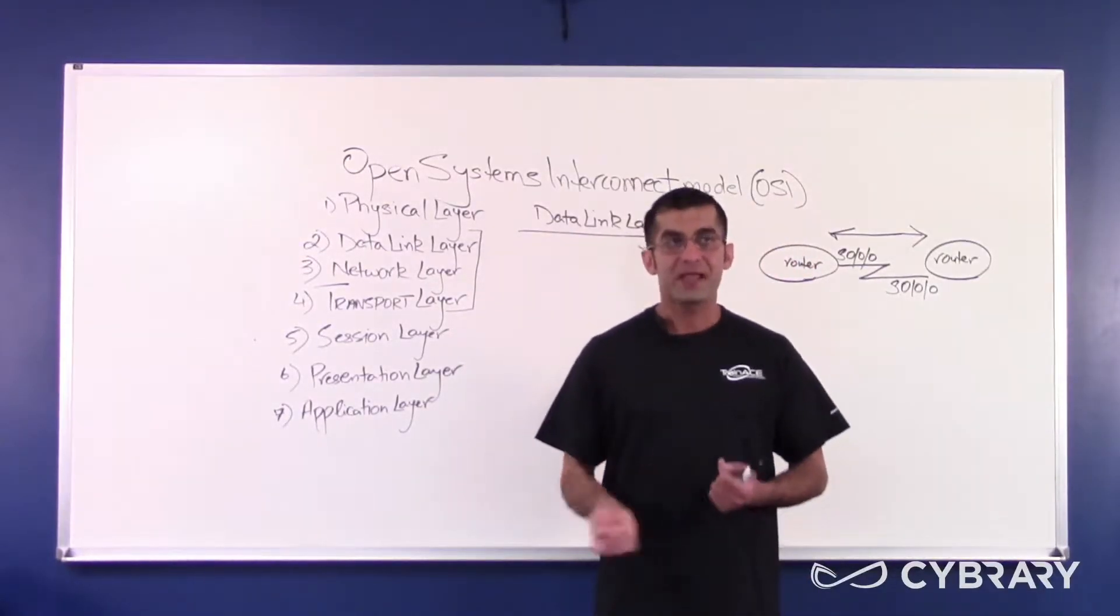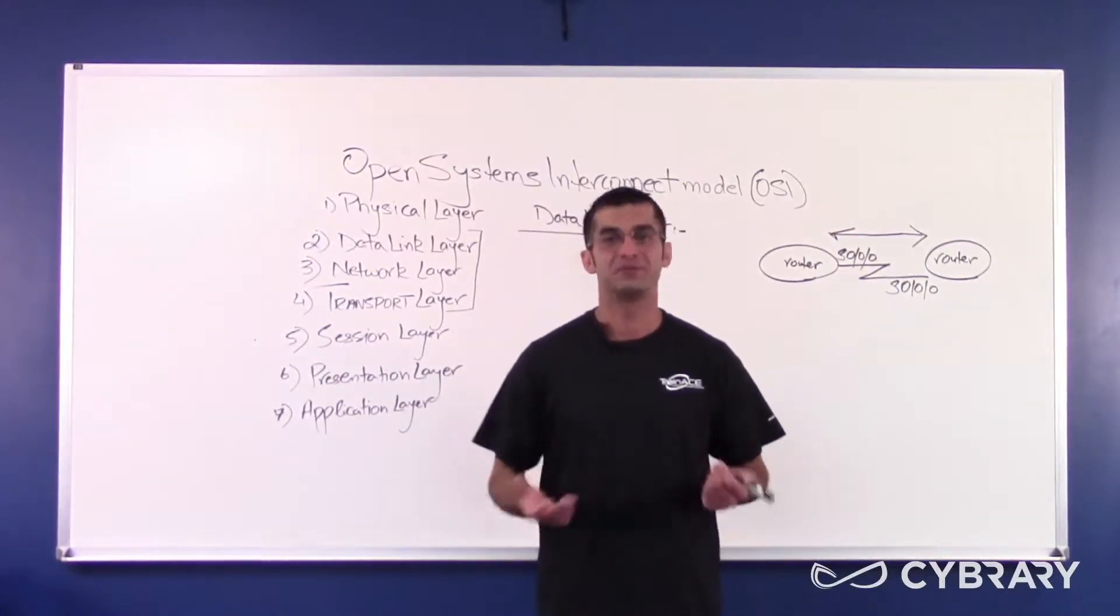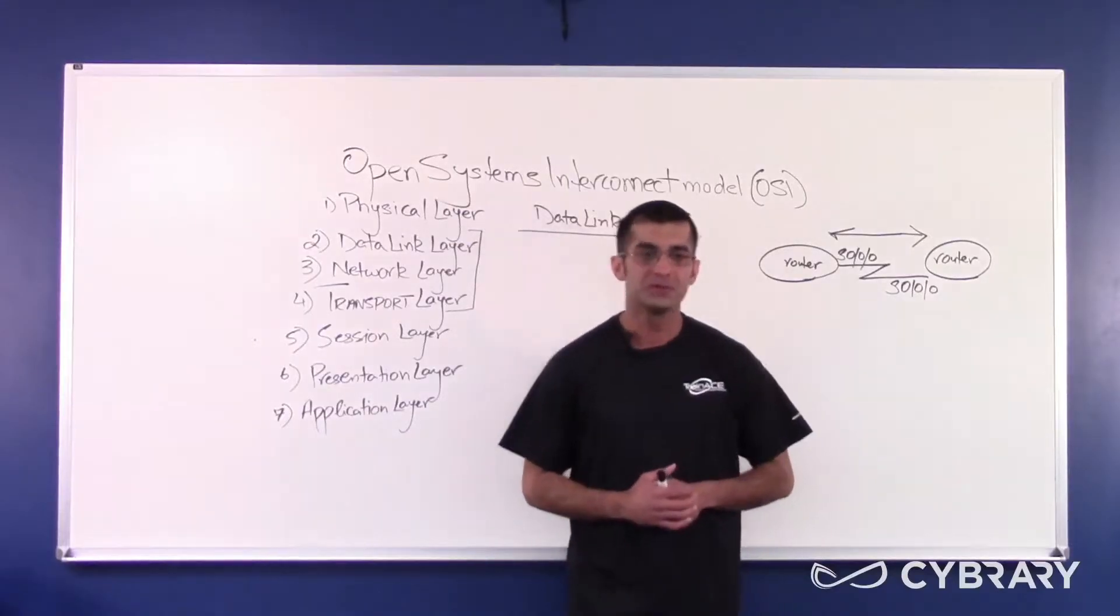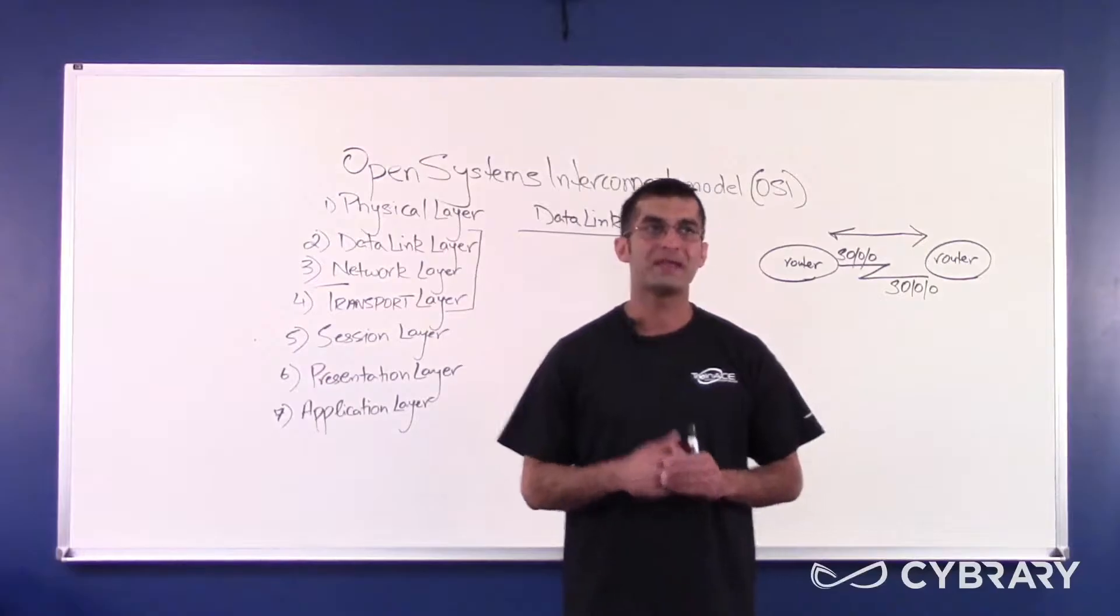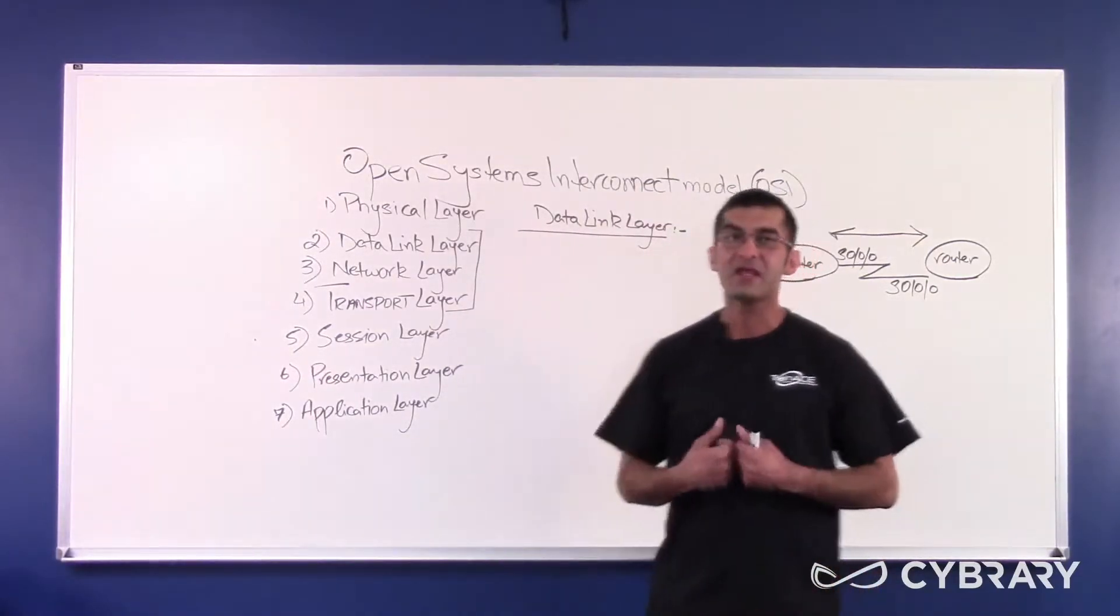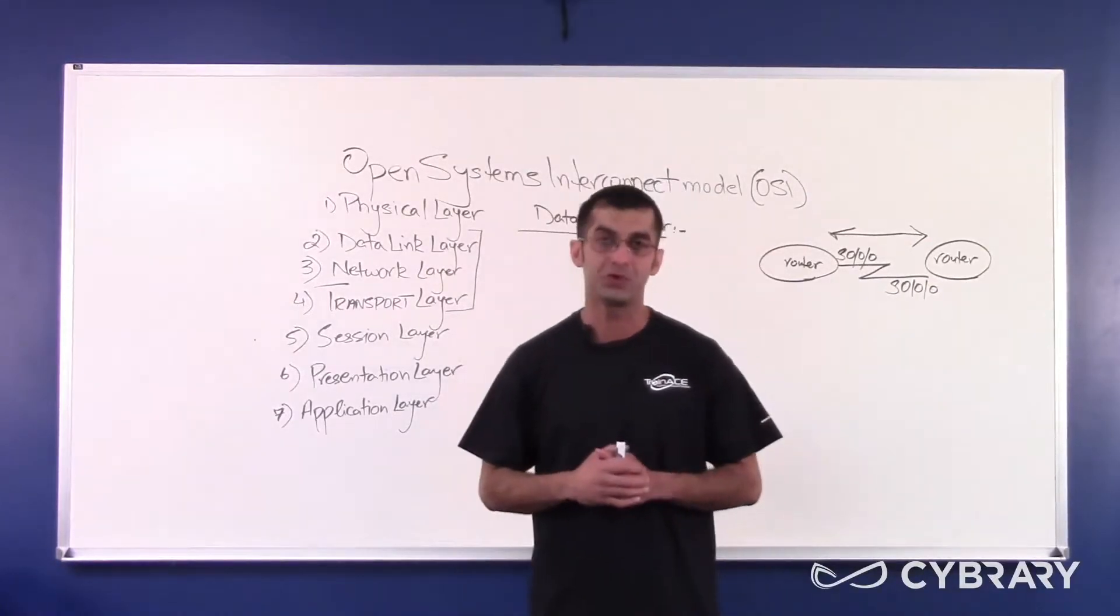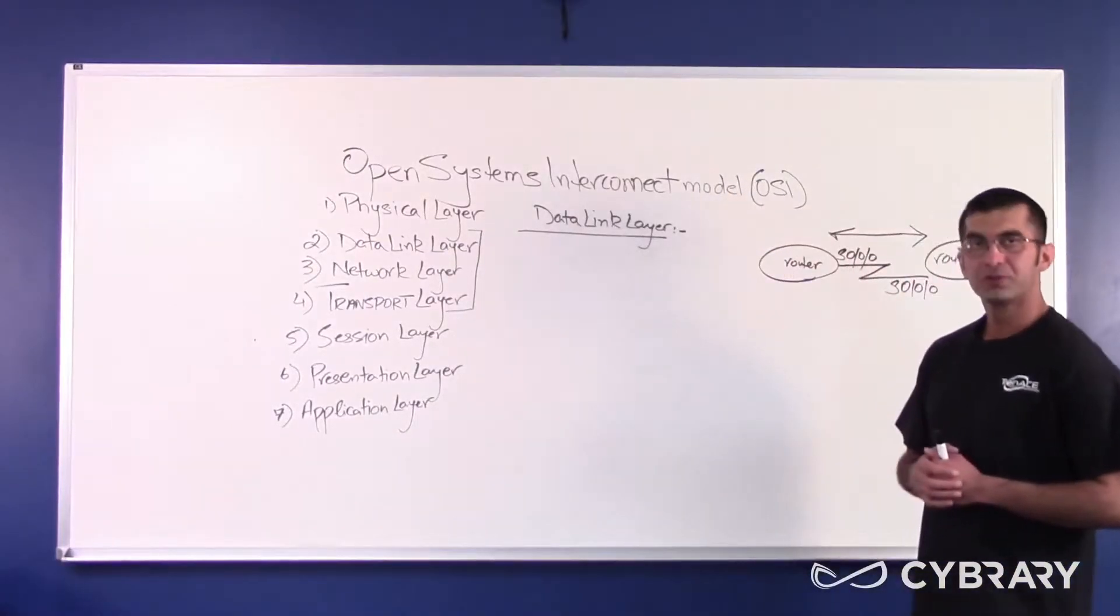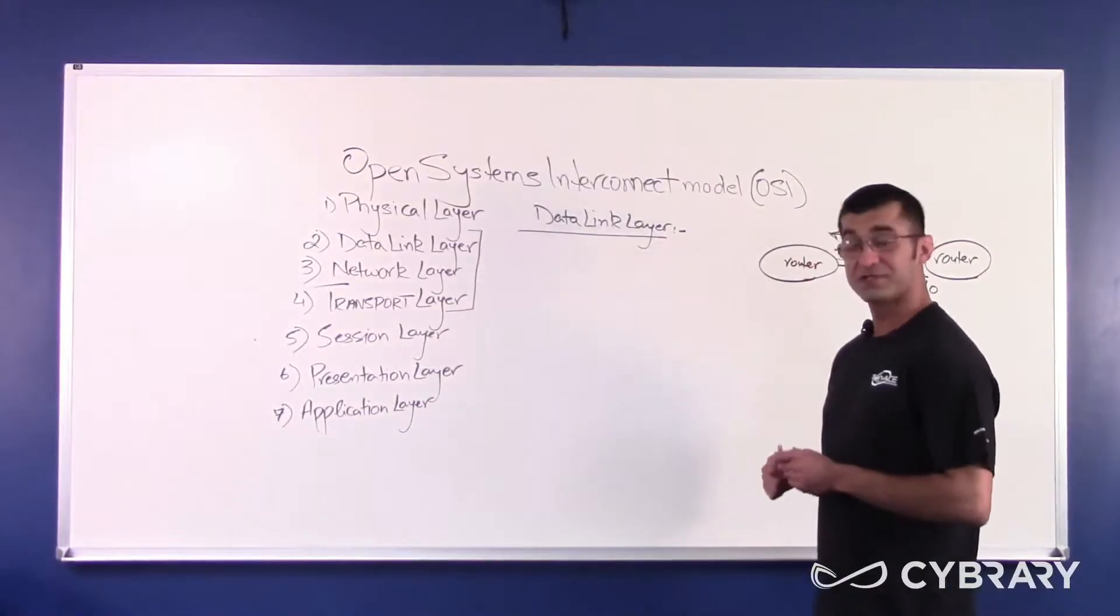At layer 2, the data has been put into a set structure. At every layer past the physical layer, the data is put into a set structure, and this set structure is called your PDU or your protocol data unit. At layer 2, the protocol data unit is called a frame.